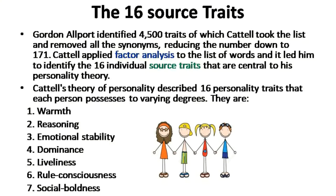Now let us look into the 16 source traits that Cattell identified. Gordon Allport, who was one of the first modern trait theorists, identified 4,500 traits. Cattell took this list and removed all the synonyms, reducing the number down to 171. He then applied factor analysis to the list of words and eventually identified 16 individual source traits that are central to his personality theory.